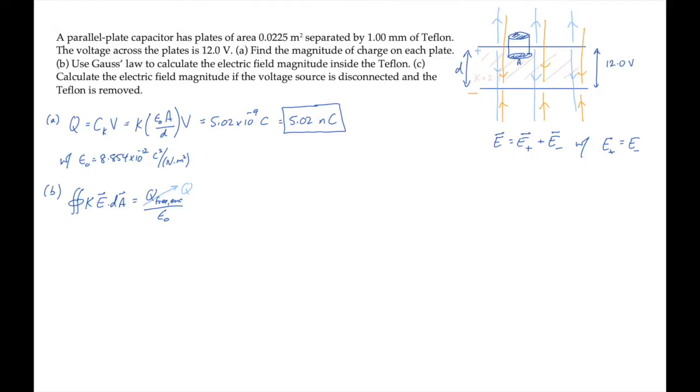The quantity E dot dA integrated over the Gaussian surface is just E times A, due to the electric field between the two plates. We multiply by K, and that equals the charge Q over epsilon naught.